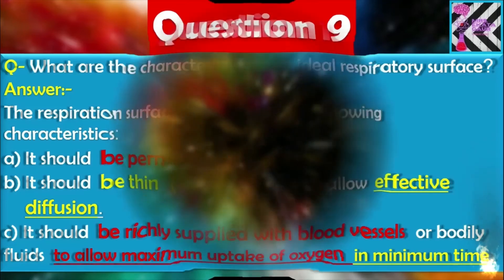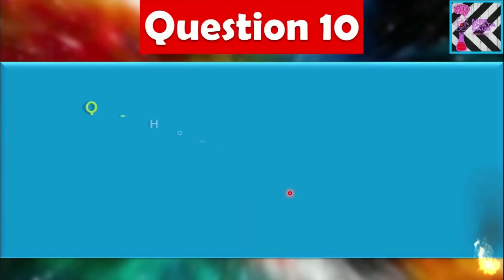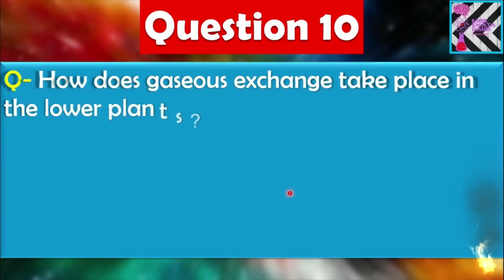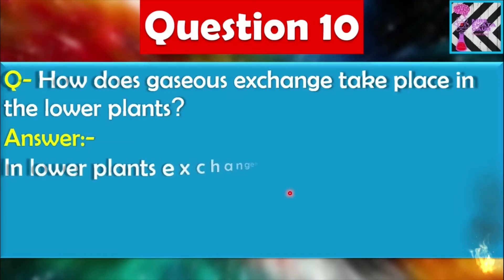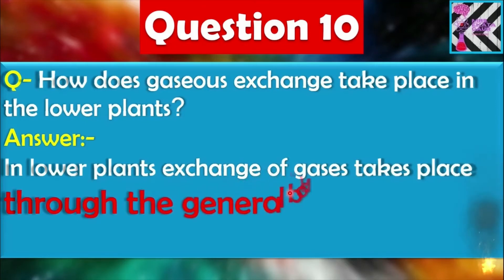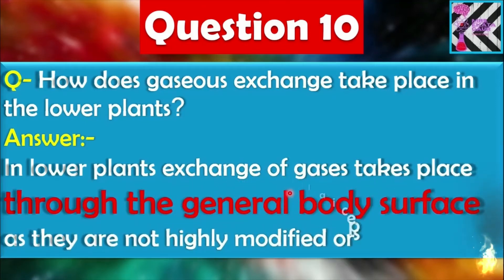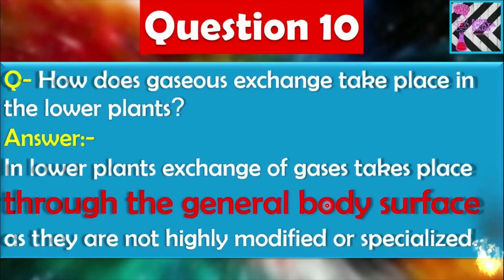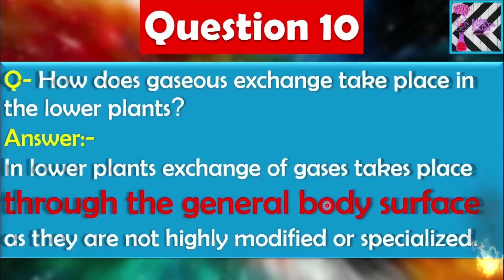Question number ten: How does gaseous exchange take place in lower plants? In lower plants, exchange of gases takes place through the general body surface as they are not highly modified and specialized. Stomata and epidermis help in this process.